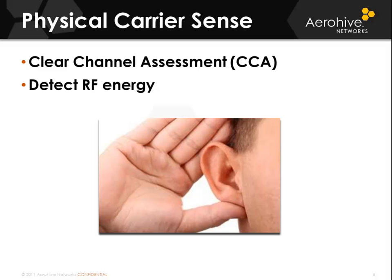Physical carrier sense: the physical media-dependent sublayer of layer 1 of the OSI model is where the radios will listen to see if there is another 802.11 signal in the air. If there is no 802.11 signal in the air, the medium is deemed to be idle and the radio will transmit. If there is another 802.11 signal in the air, that signal will have a duration value between 0 and 32,768 microseconds. The client trying to transmit will take that value and populate the network allocation vector — a logical timer — count that down, then revisit the clear channel assessment. If no one is transmitting, the device will be able to transmit; if another transmission is heard, the backoff procedures continue.